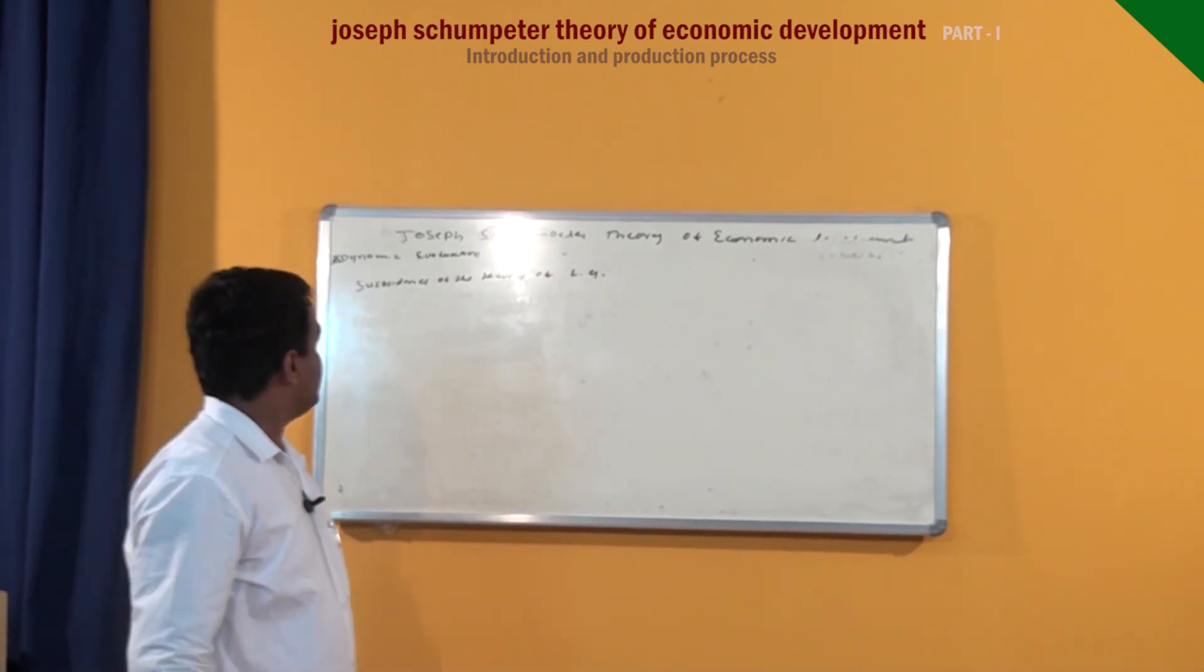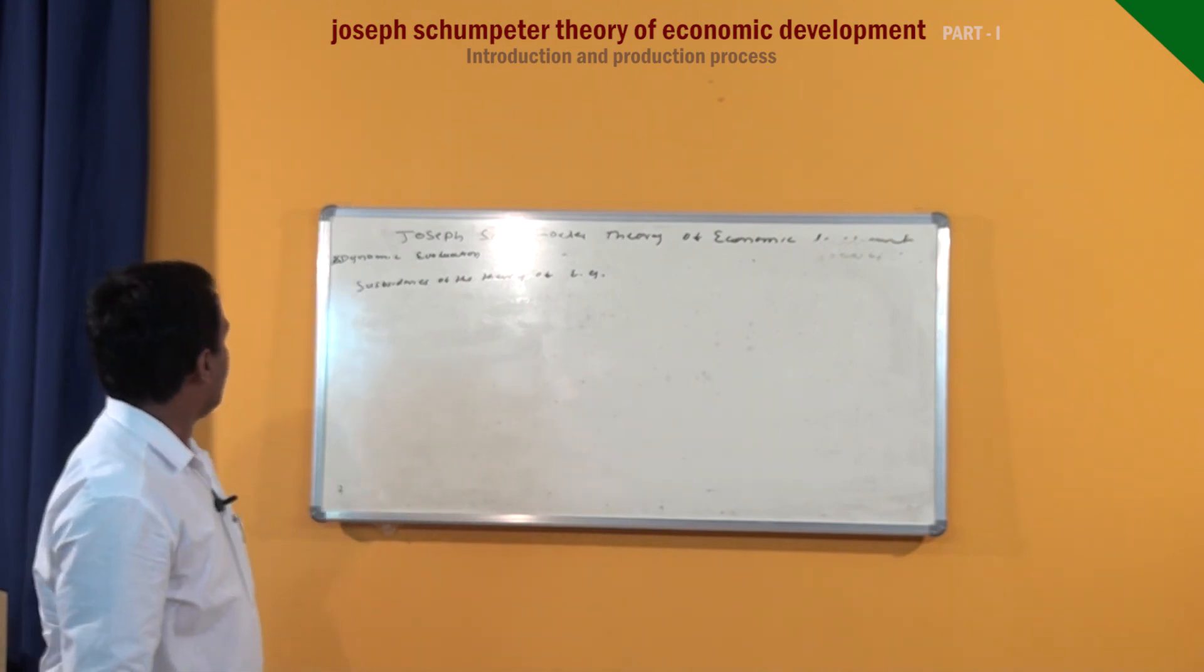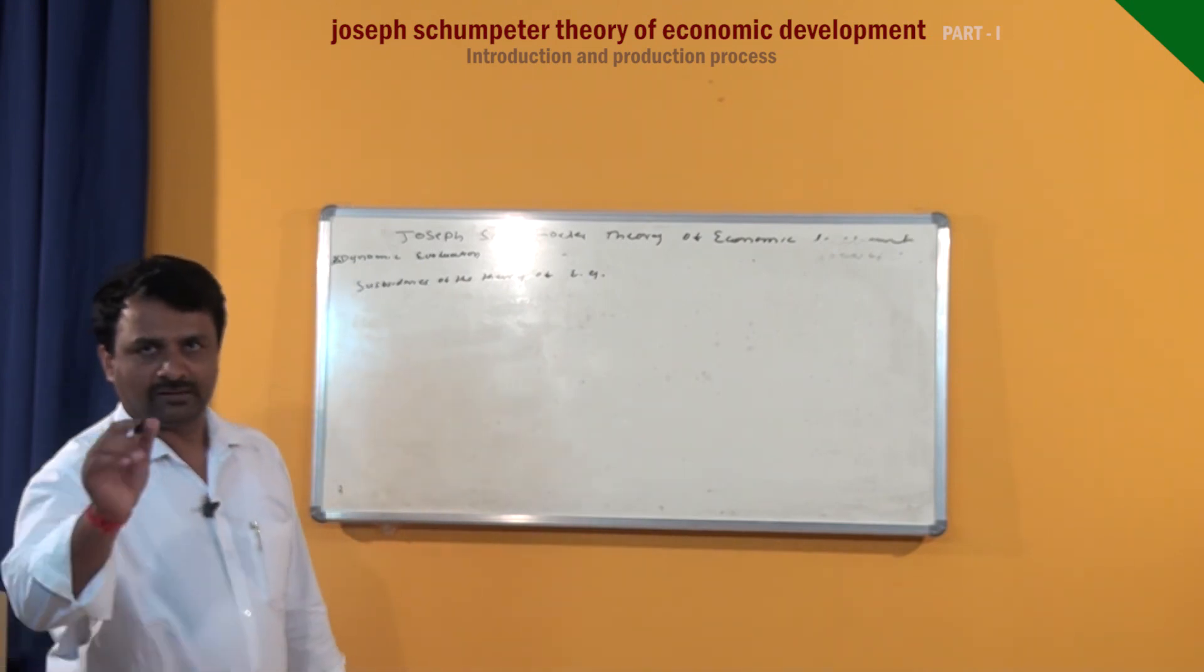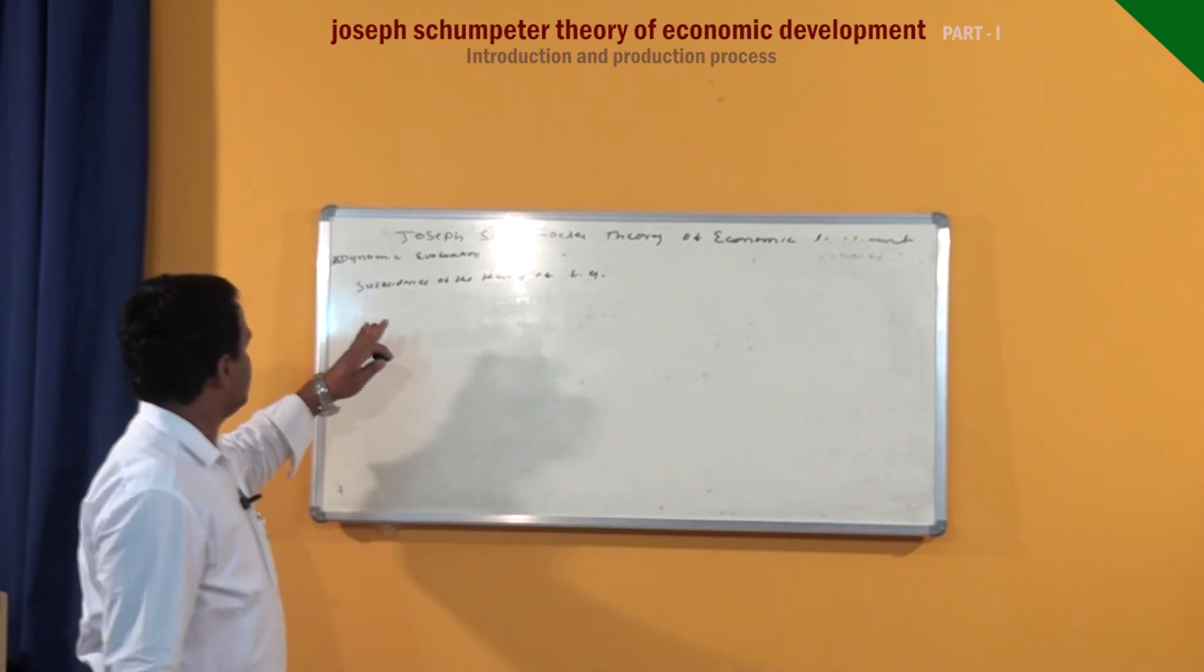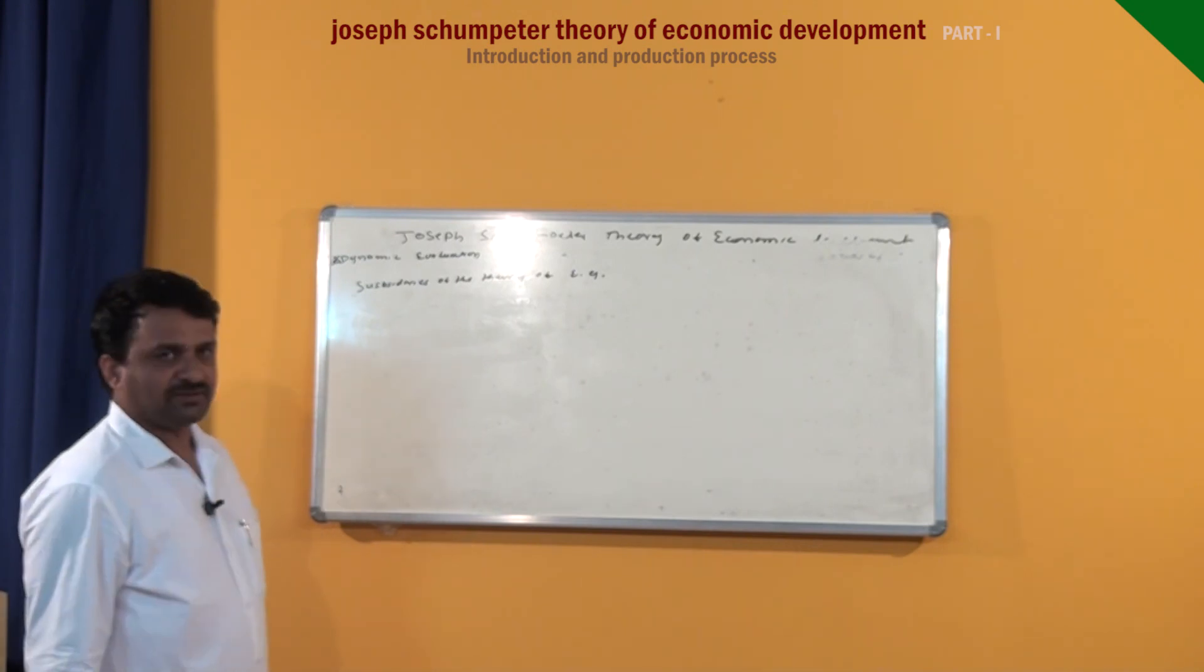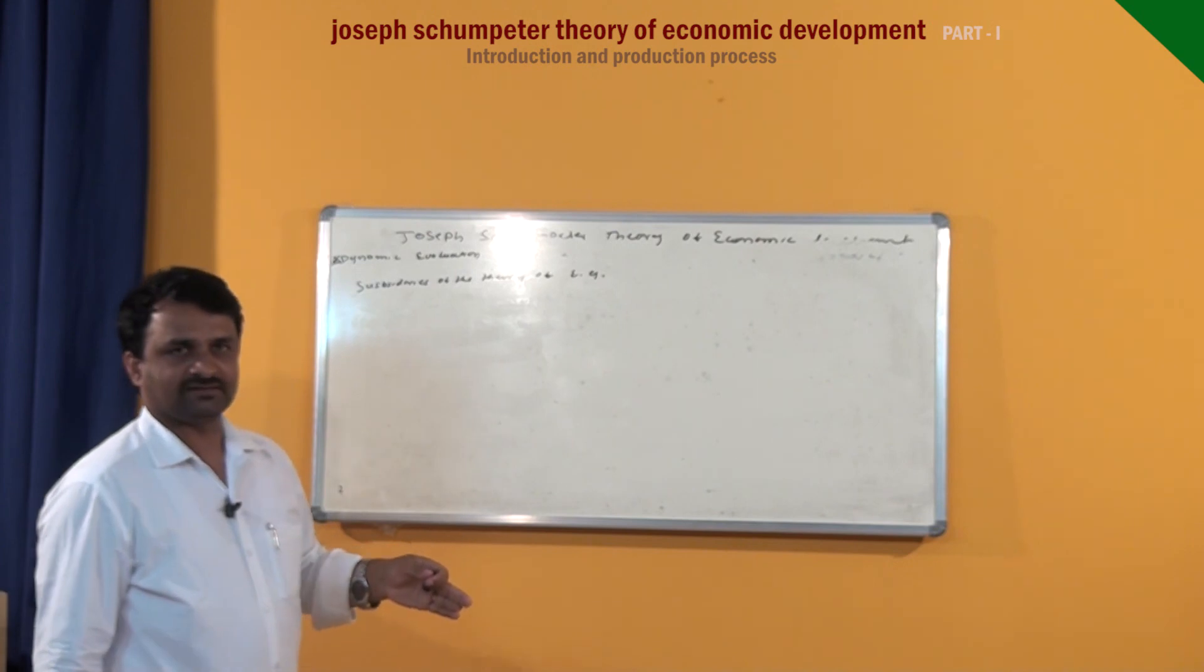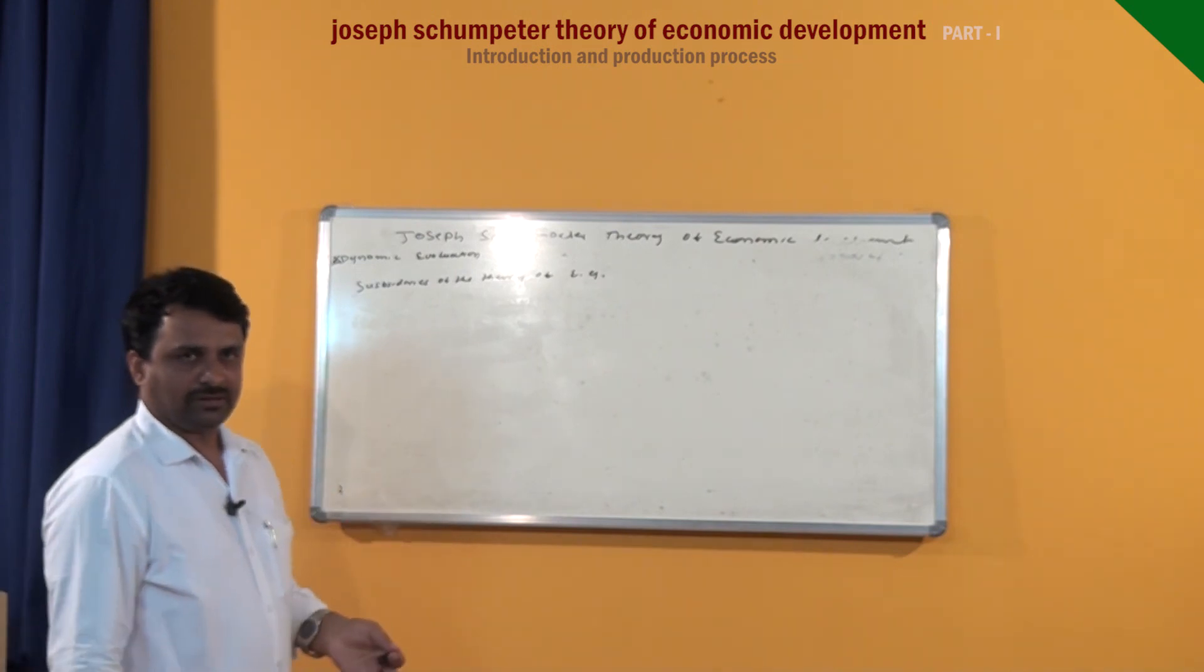Subsidiaries of Joseph Schumpeter's theory of economic growth are: savings, investment, innovation, population, and role of entrepreneur. These subsidiaries of the theory of economic growth are discussed in the next video. Thank you very much.